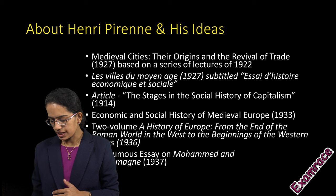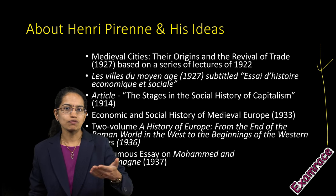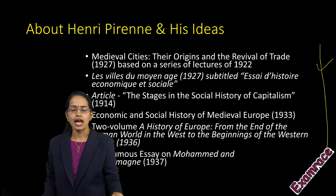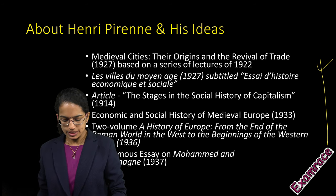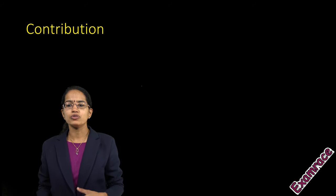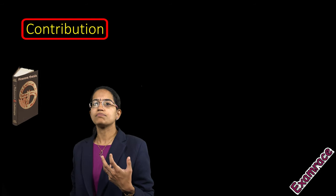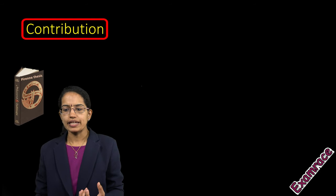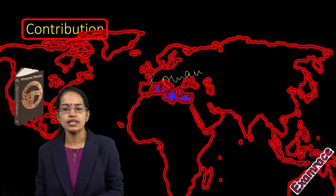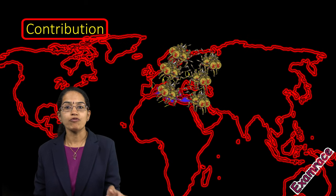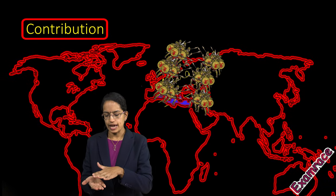Here are some of his works. One possible exam question could ask which of these works belongs to Henri Pirenne, so you must have an idea about the works done by him. He gave a concept known as the Pirenne Thesis. Under this thesis, he explained how Roman civilization maintained continuity despite the fall of Rome.